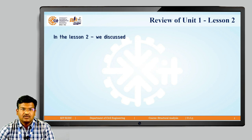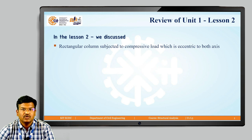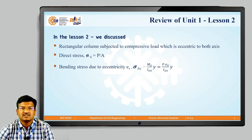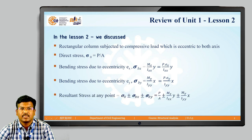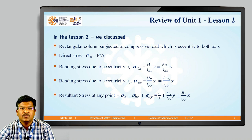Let us see what we discussed in lesson number 2. We discussed about the rectangular column subjected to compressive load eccentric about both axes. Direct stress is calculated by P by A. Bending stress about x-x axis: sigma_Bx = Mx / Ixx × y = P × Ex / Ixx × y. Bending stress about y-y axis: sigma_By = My / Iyy × x = P × Ey / Iyy × x. The resultant stress at any point is the algebraic sum of direct stress ± bending stress due to eccentricity Ex ± bending stress due to eccentricity Ey.